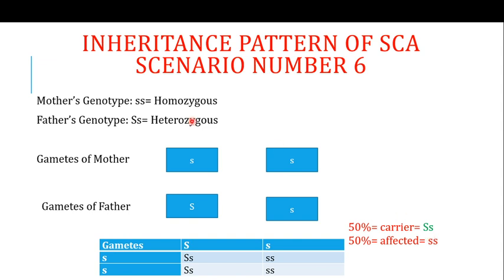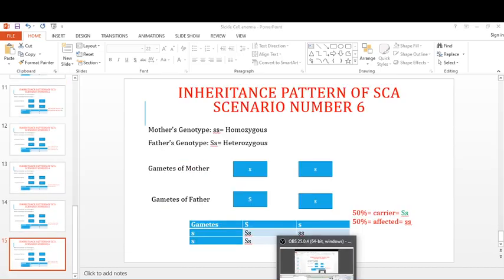In the sixth scenario, the mother is homozygous diseased (ss) and the father is heterozygous (Ss). All of the mother's gametes carry small s, while 50% of the father's gametes carry capital S and 50% carry small s. When crossed, 50% of offspring will be carriers and 50% will be affected. This concludes the discussion on the inheritance patterns of sickle cell anemia.